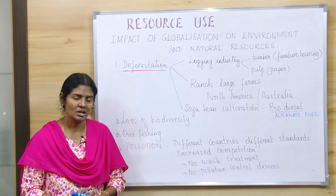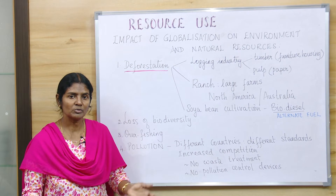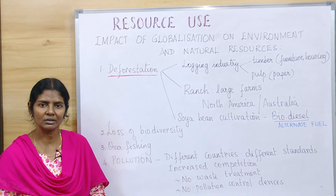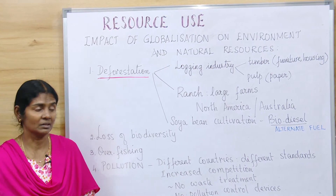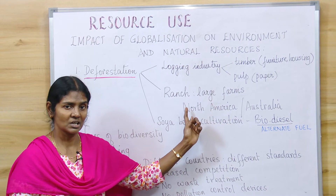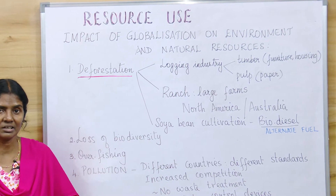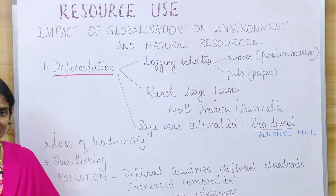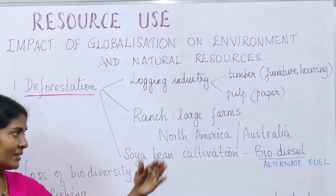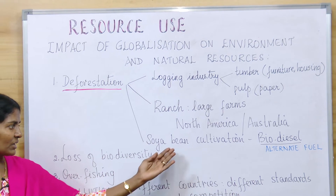The next cause is ranching. When we need meat and meat products, we need a lot of cattle, and cattle need enough grass to grow and multiply. So we need large farms called ranches. Especially in North America and Australia, forests are completely cut down and grass is grown so that these ranches can be established.